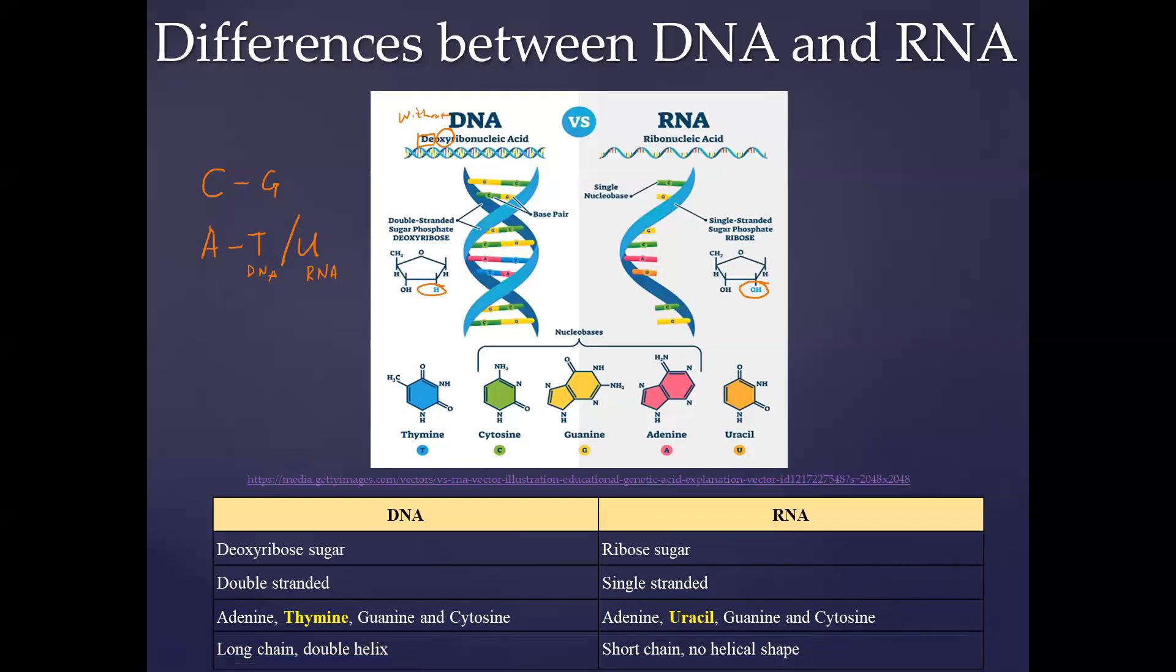Another difference is that the DNA molecule is a much longer molecule, whereas the RNA is made from a portion of DNA, so it's a much shorter molecule. Also, DNA is a double helix, whereas we find the RNA is often not in a helical shape.